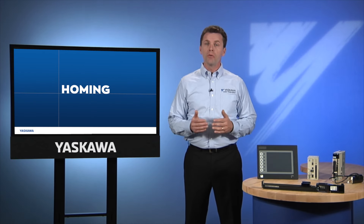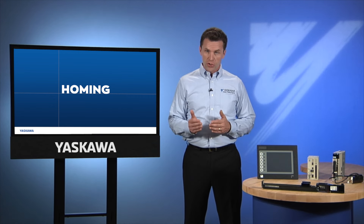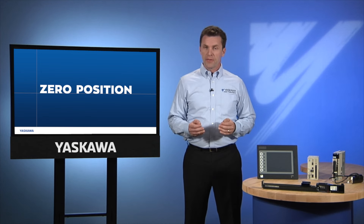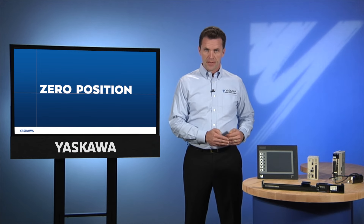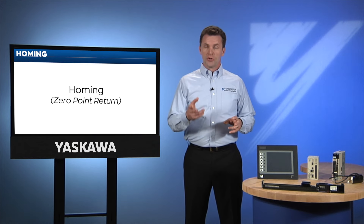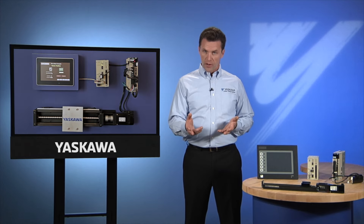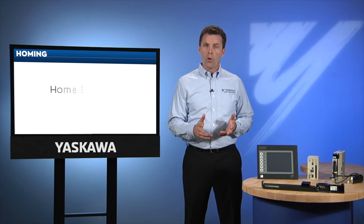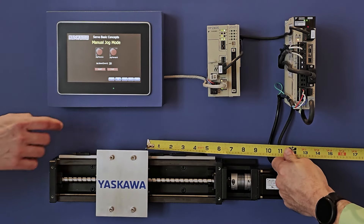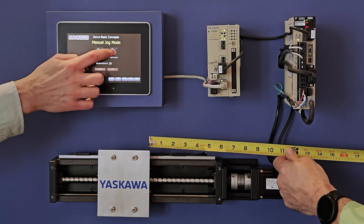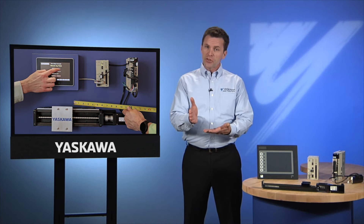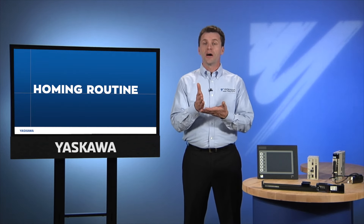Absolute positions and moves only make sense when compared to the absolute position which the controller has identified as zero. The machine requires a repeatable method to find this zero point. This method is often called homing, or zero point return. To reorient an axis that may have been moved while the power is off, the controller needs to home each axis every time the machine powers up. A very simple way to accomplish homing is for the operator to visually align the axis to its zero position, but in actual practice, most machines rely on a fully automated sequence called a homing routine.